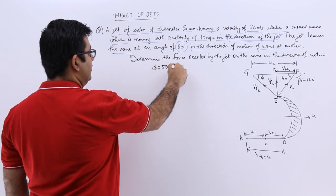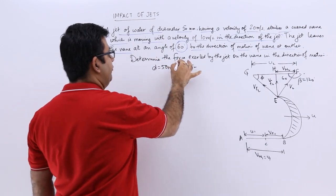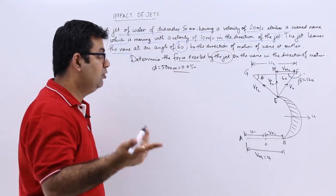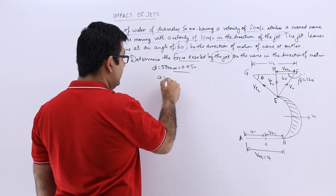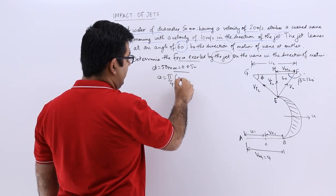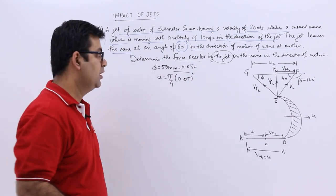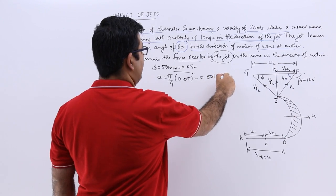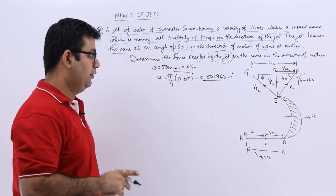50 mm which is 0.05 meters. And we need to find out the force exerted by the jet on the vane, which means we need to find out force for which I need to have an area as well. So area would be pi by 4 into 0.05 square. This would be equal to 0.001963 meter square.